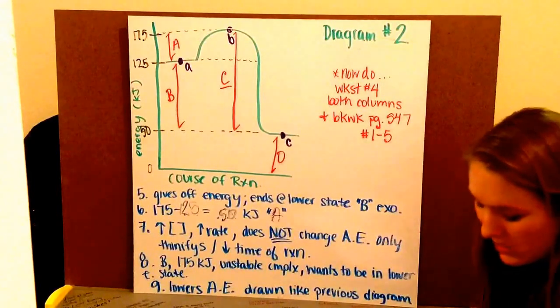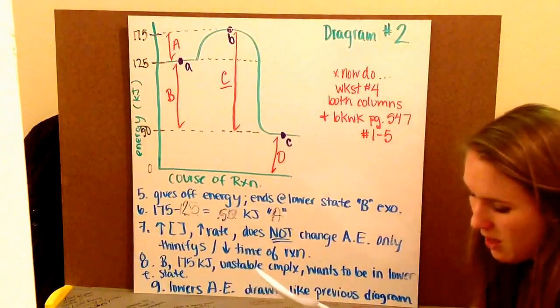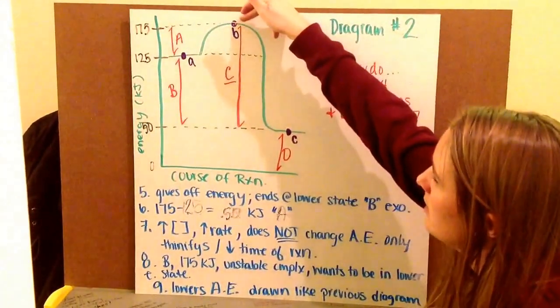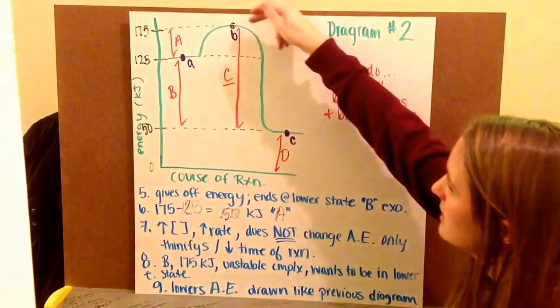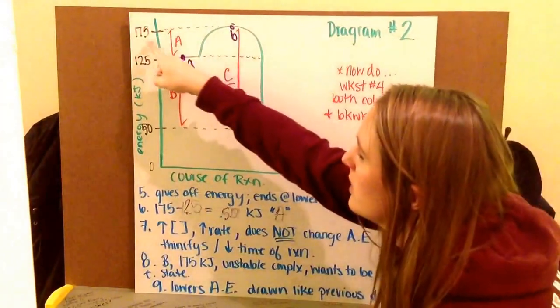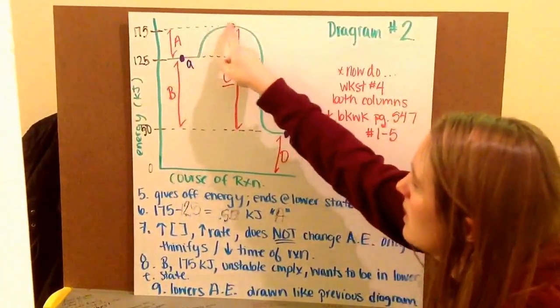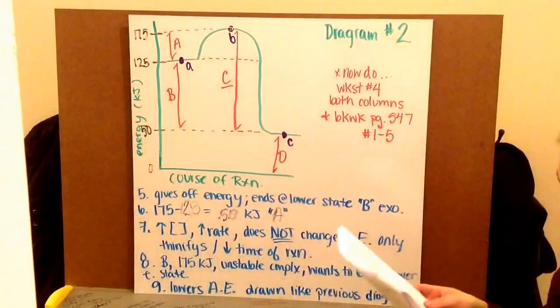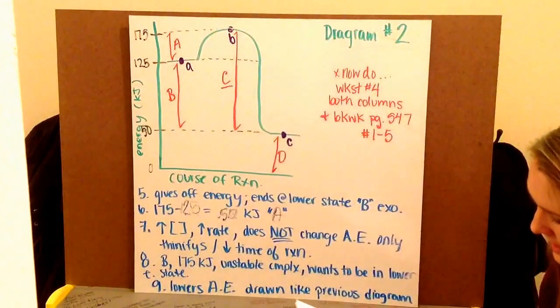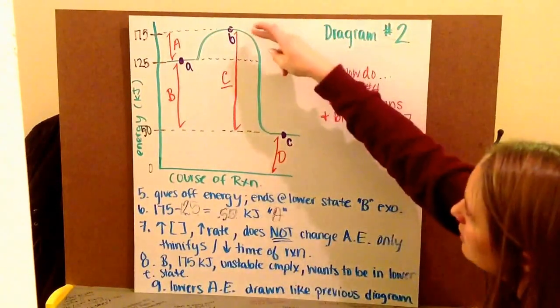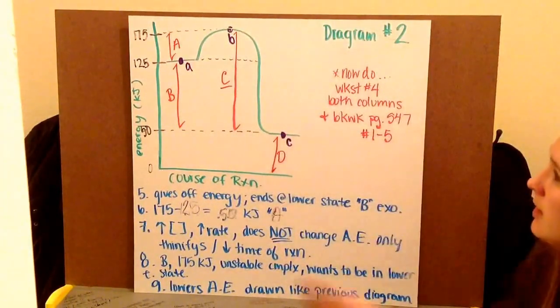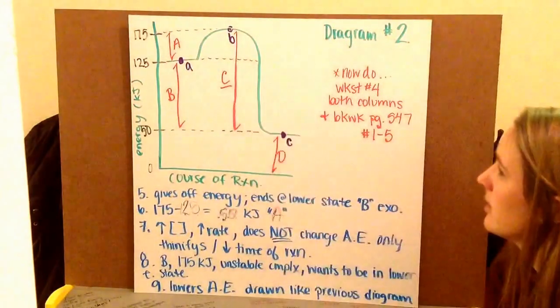Number eight asks, what letter represents the position of the activated complex? Well, that's going to be this top of my little hump there at the crest. That's letter lowercase b. The energy of this activated complex is 175 kilojoules. I just draw a line across, and one's drawn across for you. Notice that it has a high energy. It is unstable complex, and it wants to be in a lower, more stable energy level, hence why this big drop in energy here. This is only a temporary time.